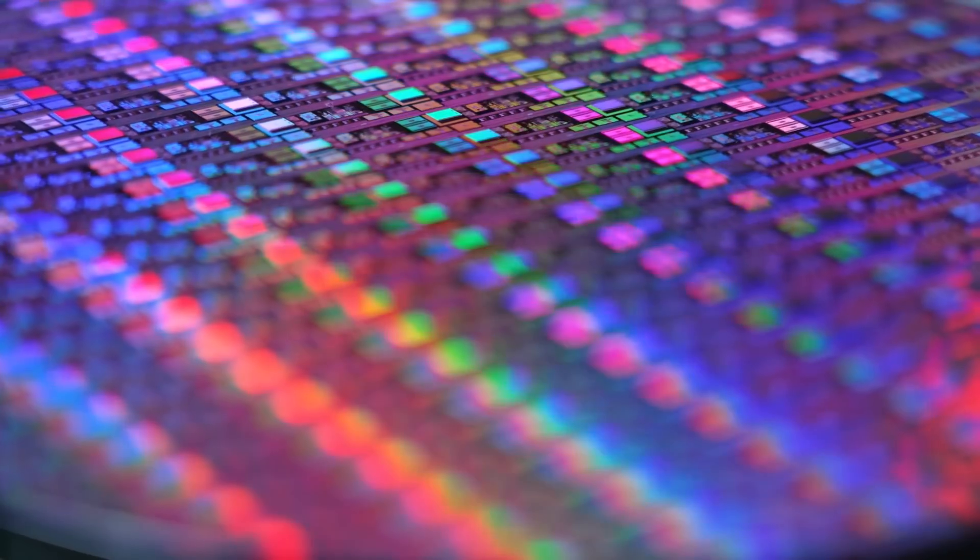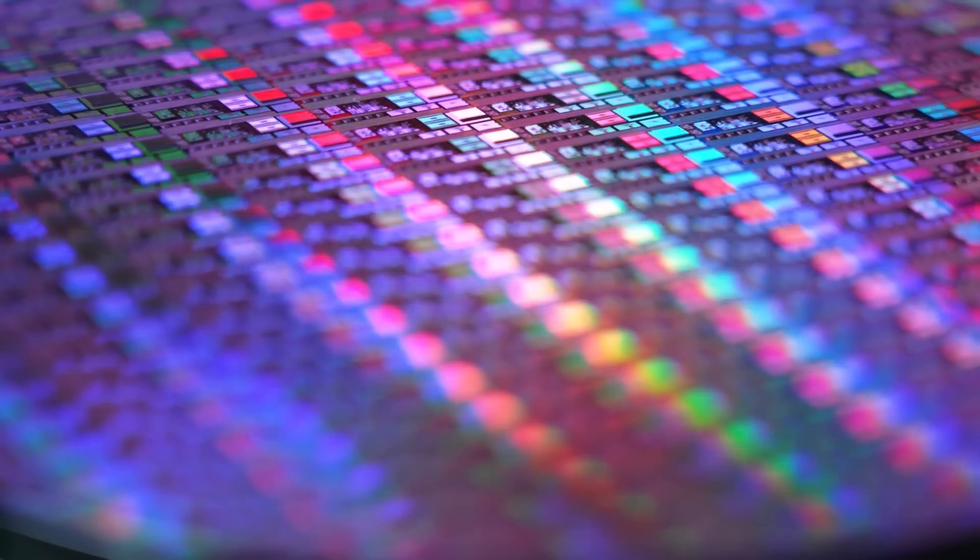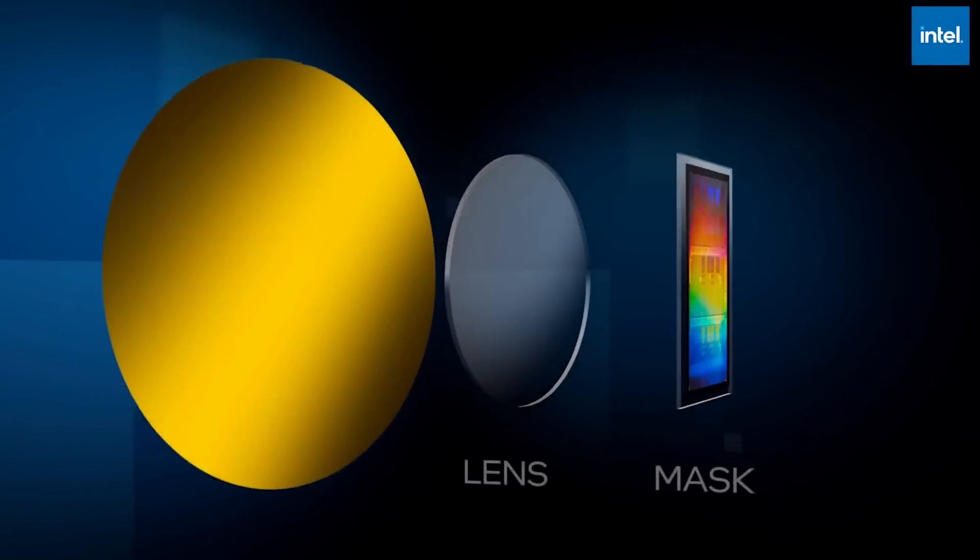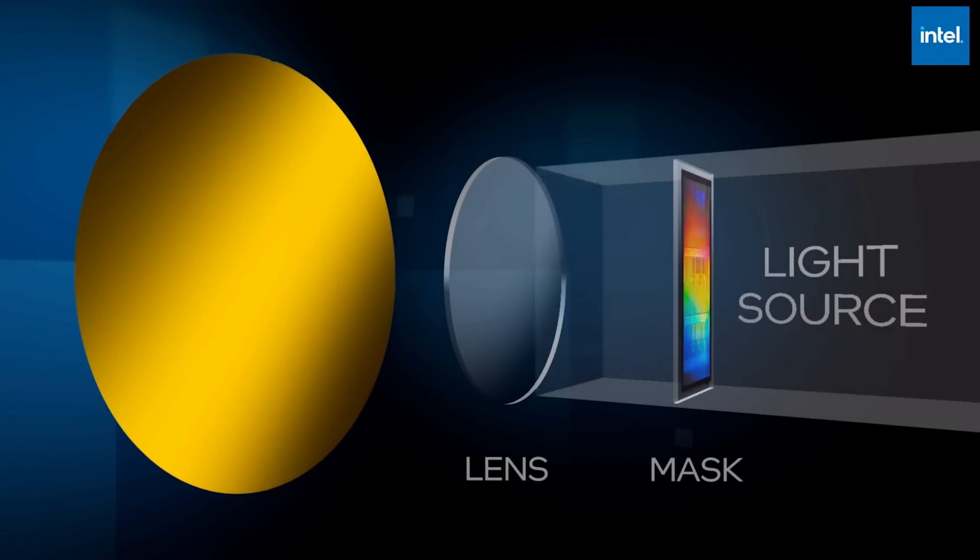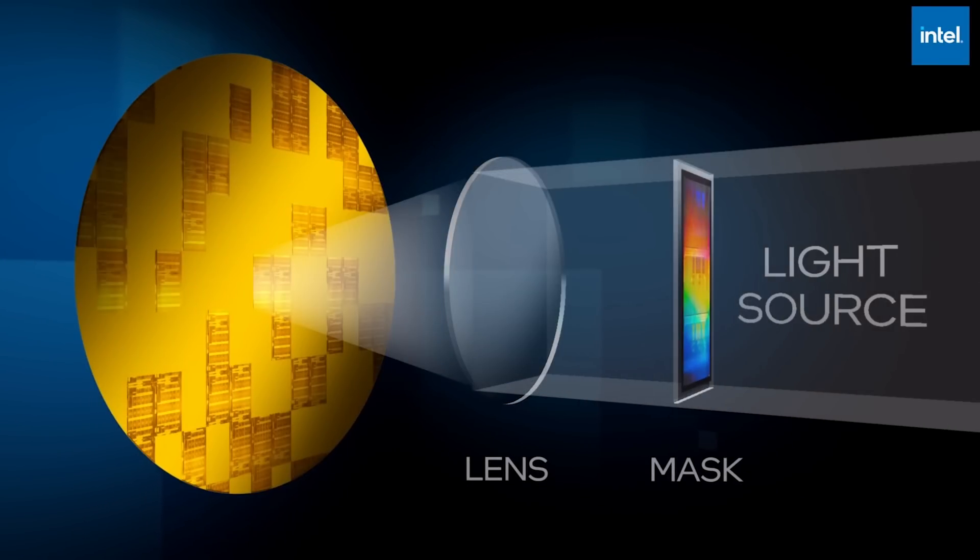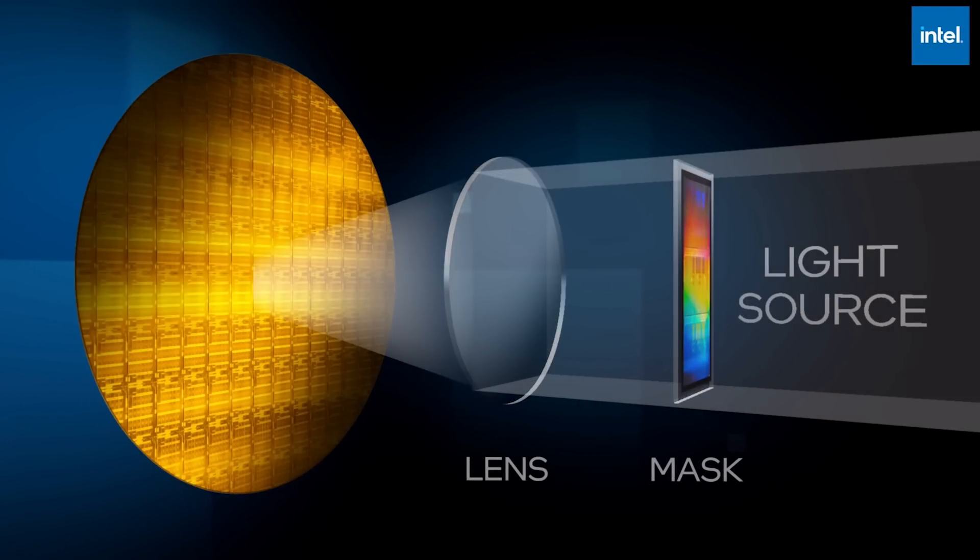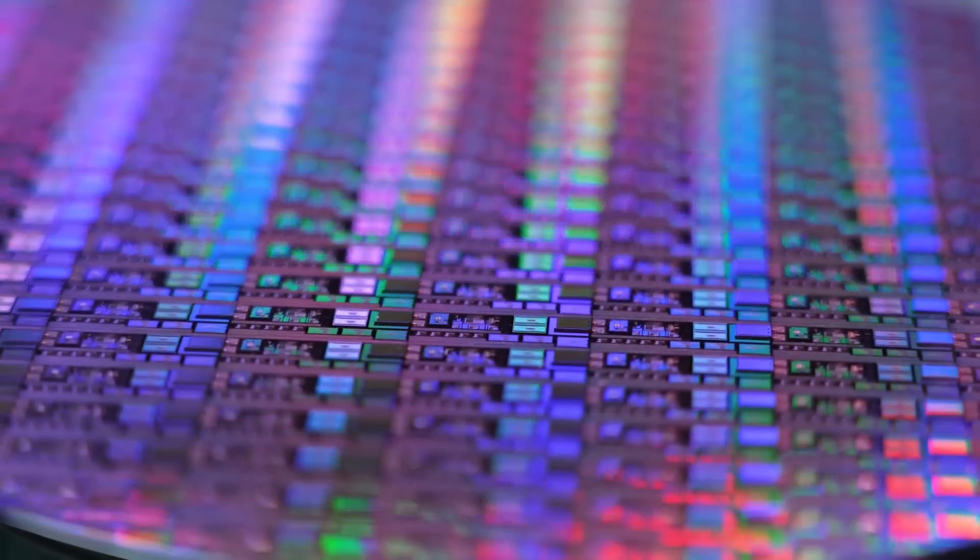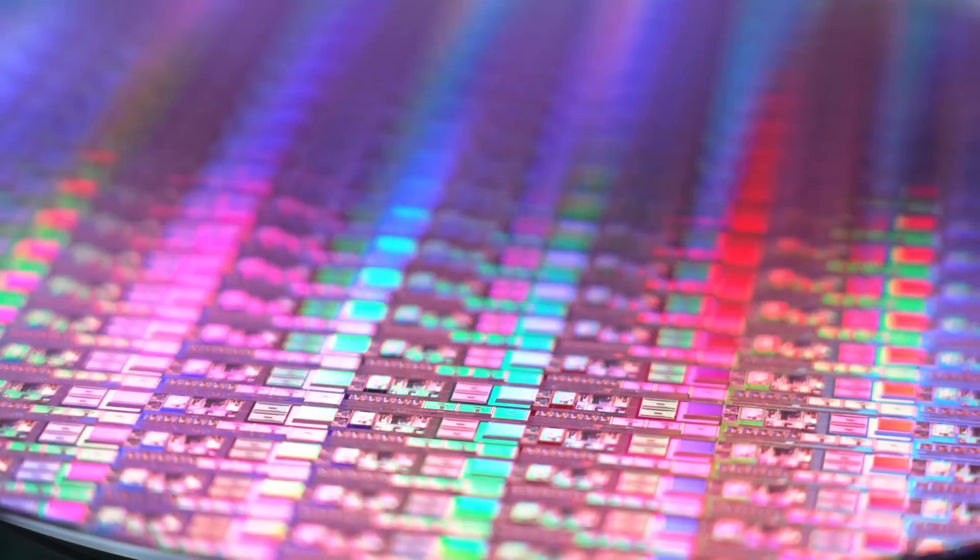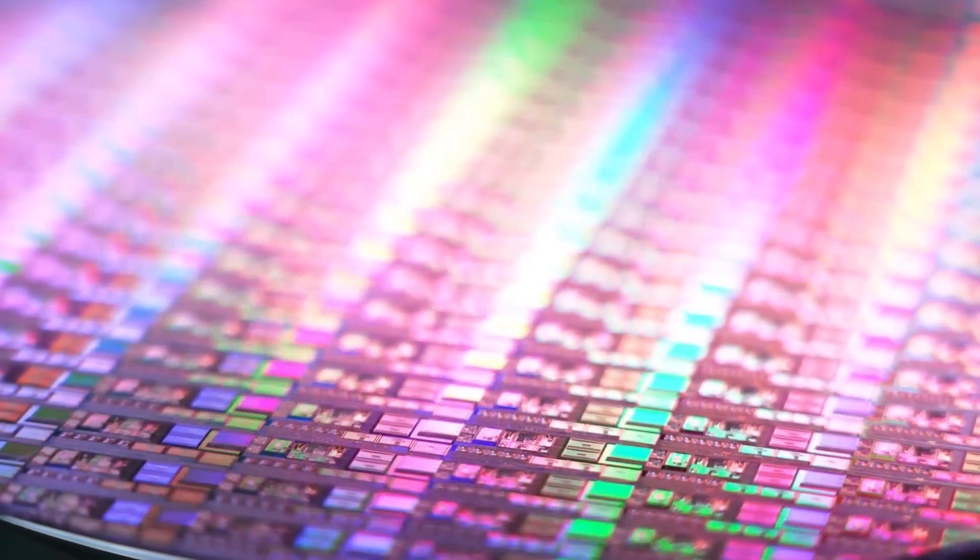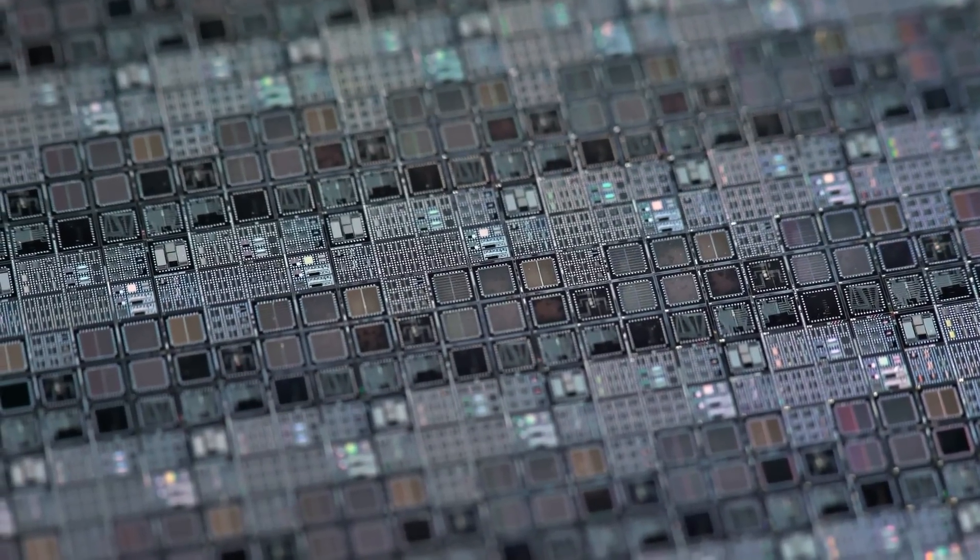So how does the lithography process work? I mentioned before it involves shining tiny beams of light onto silicon wafers. The idea is to use light and shadow to carve out structures and special coatings on these silicon wafers. After these light patterns are beamed onto the coated wafer, the surfaces are treated with special chemicals.